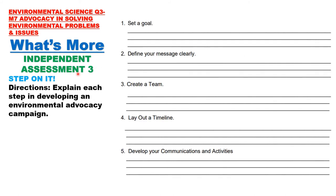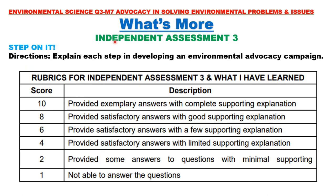Independent Assessment 3 — Step On It: Explain each step in developing an environmental advocacy campaign. 1. Set a goal. 2. Define your message clearly. 3. Create a team. 4. Lay out a timeline. 5. Develop your communications and activities. Independent Assessment 3 will be graded based on this rubric. The perfect score is 10 points if you have provided exemplary answers with complete supporting explanation.